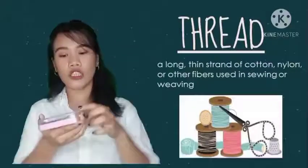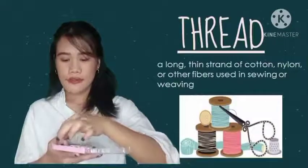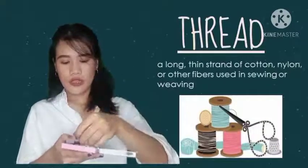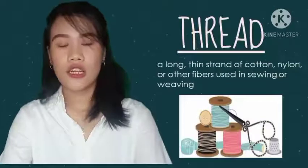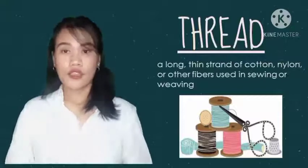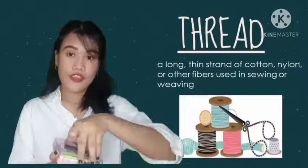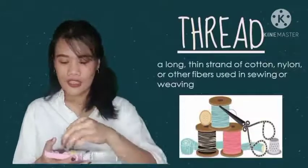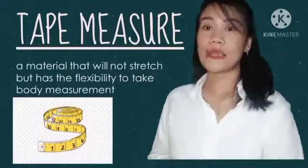I have here different colors of thread: white, black, maroon, gray, red, and maroon. I also have a needle threader, which is helpful especially for young or older people to put the thread through the needle. The next sewing tool is the tape measure.